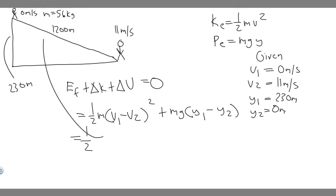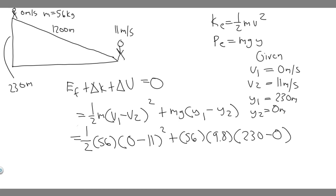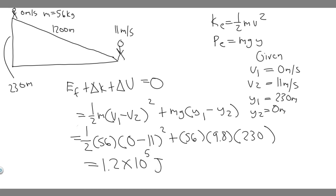Plugging in: one half times 56 kg times (0 minus 11) squared, plus 56 times 9.8 times (230 minus 0). Solving this gives approximately 1.2 times 10 to the fifth joules. So 1.2 × 10⁵ joules is the energy dissipated by friction.